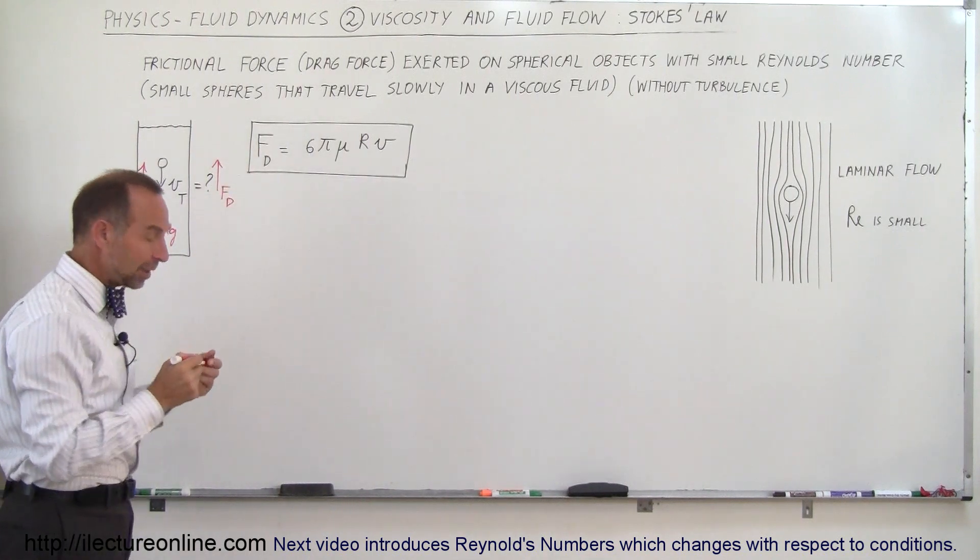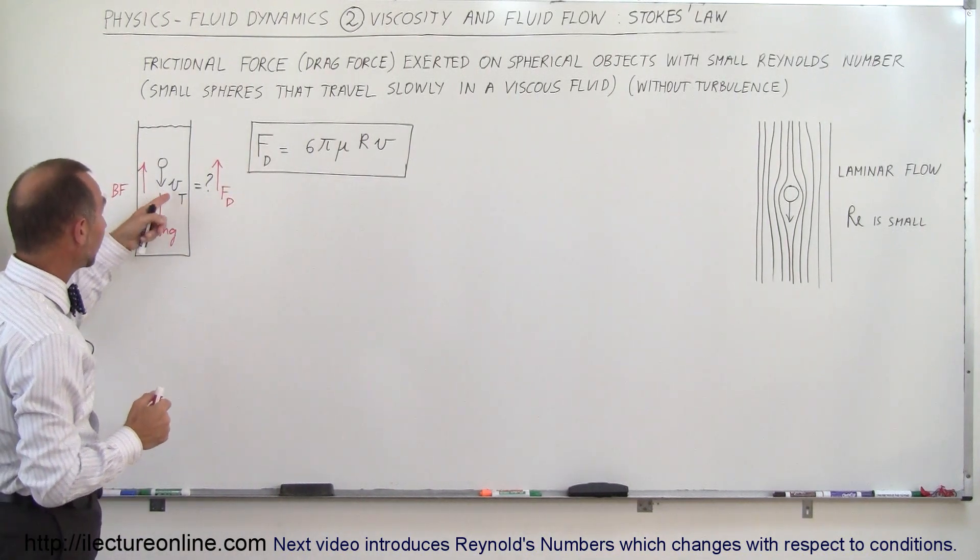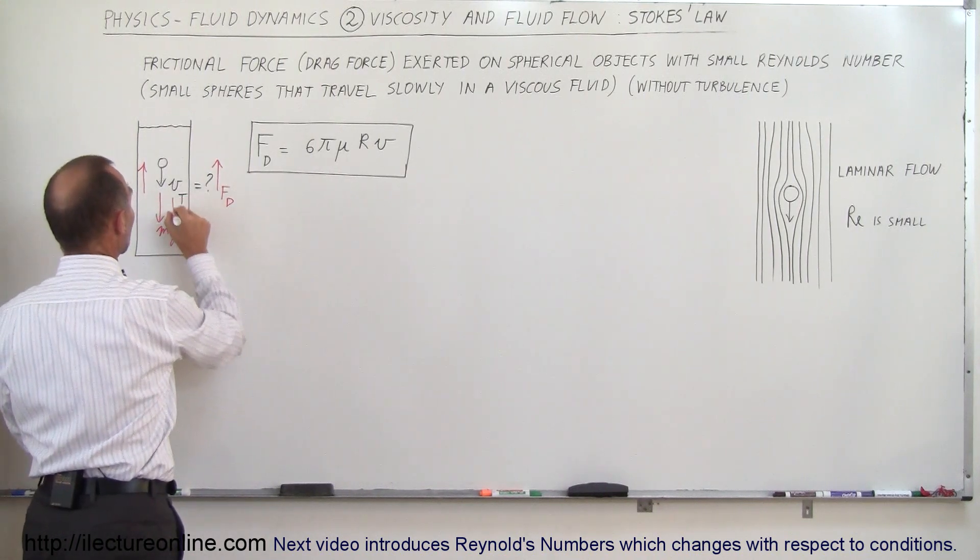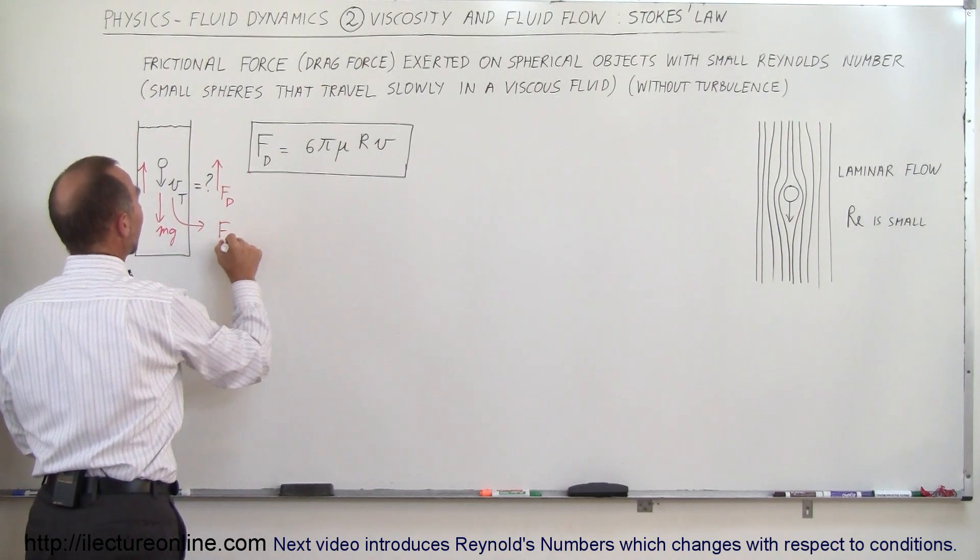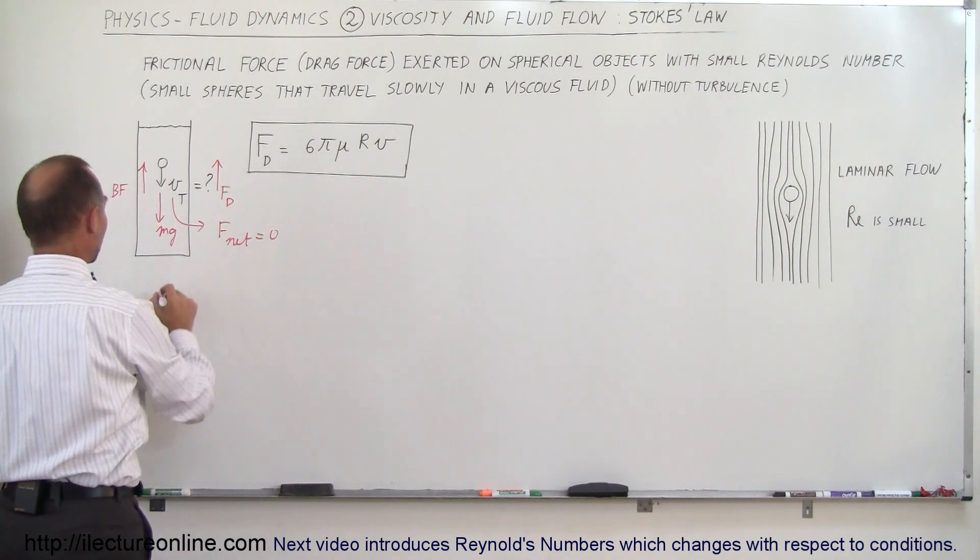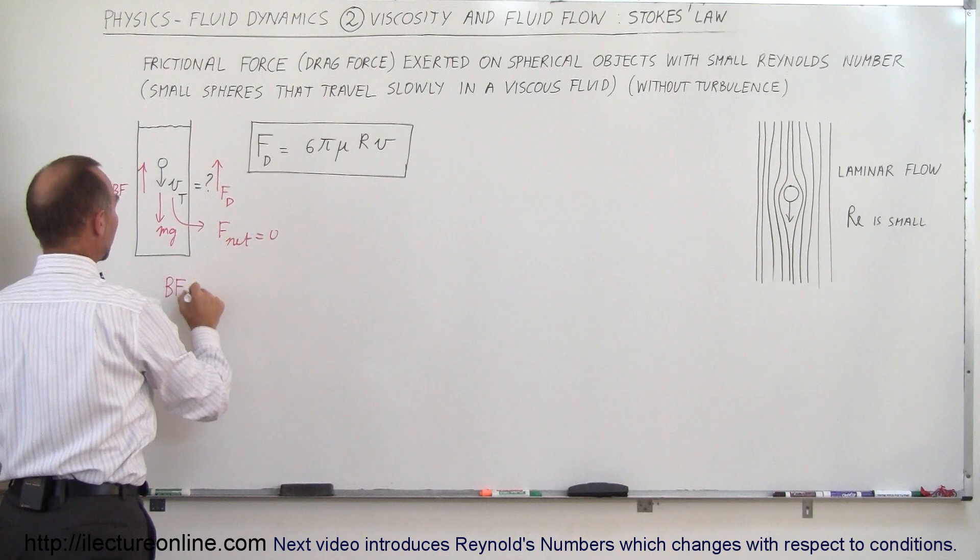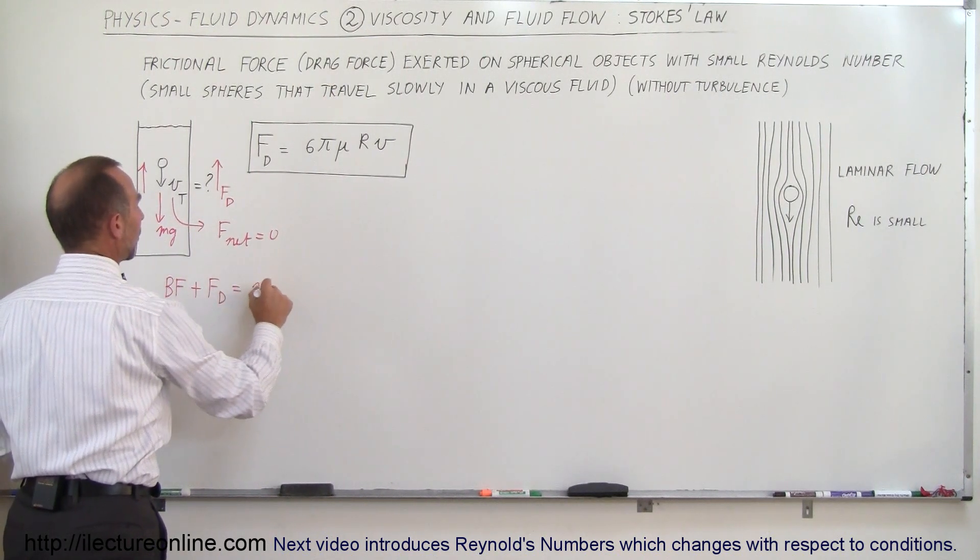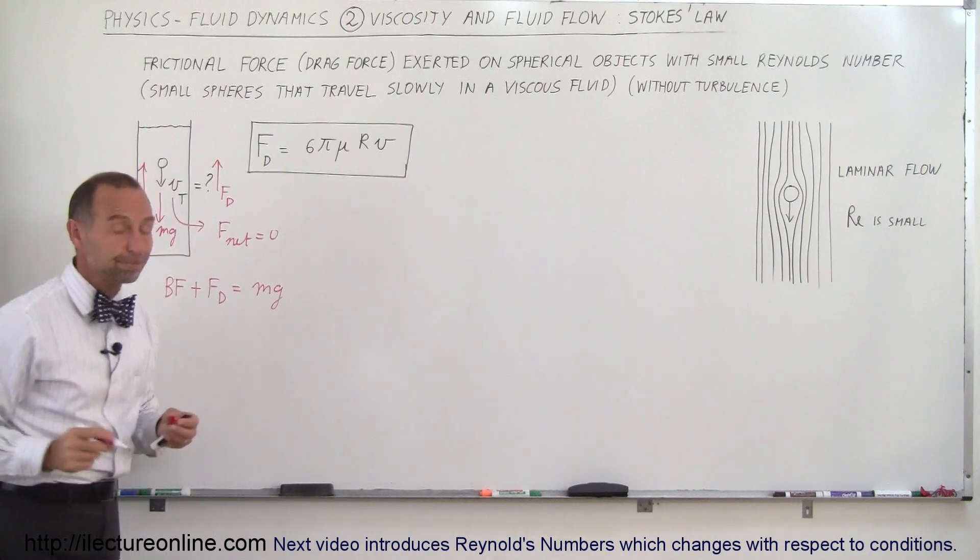And we then realize that when terminal velocity is reached, the net force will be equal to zero. So at terminal velocity, Fnet equals zero, so what we can say then is that the buoyancy force plus the drag force is equal to the weight of the marble.